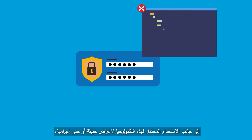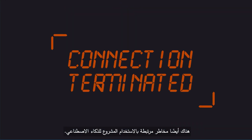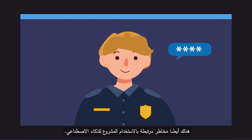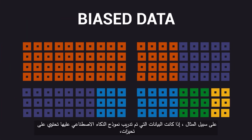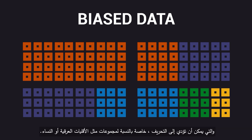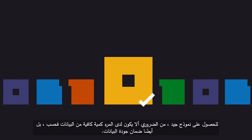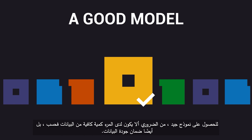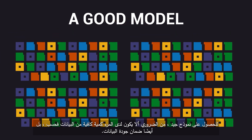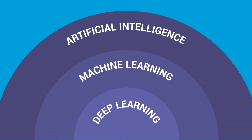Besides the potential use of such technology for malicious or even criminal purposes, there are also risks associated with the legitimate use of AI. For example, if the data on which the AI model is trained contains biases, the model will amplify that bias, which can lead to misrepresentation, especially for groups such as racial minorities or women. To have a good model, it is therefore fundamental to have not only a sufficient quantity of data, but also to ensure the quality of that data.